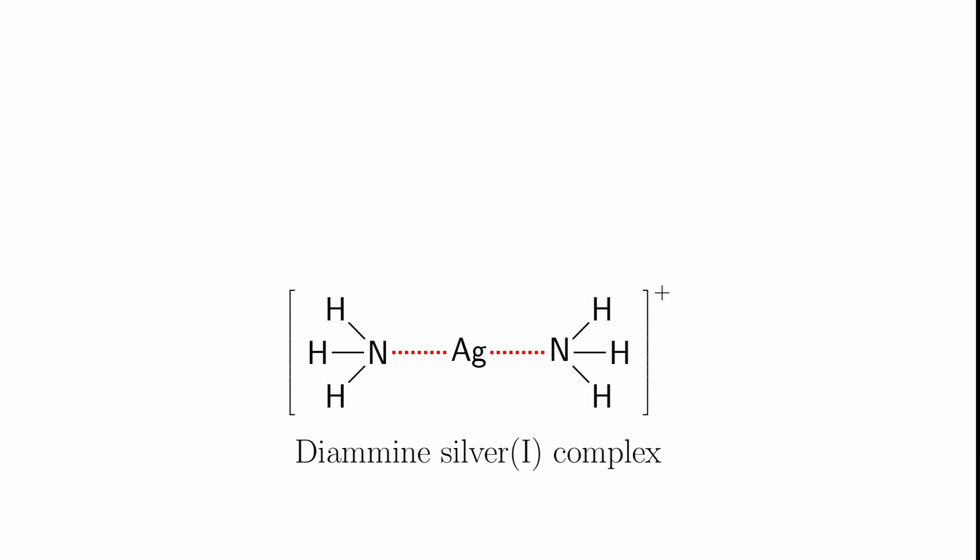The way we do that is we have a solution of silver nitrate to which we add sodium hydroxide. This produces a black precipitate of silver oxide. Then we add ammonia solution to this until the precipitate dissolves. That's when we know we have the silver complex.